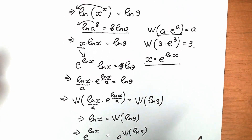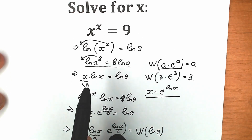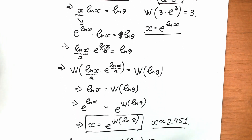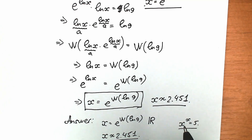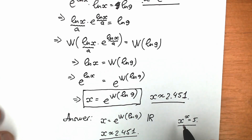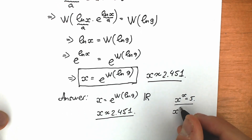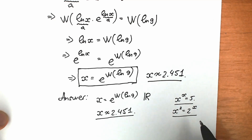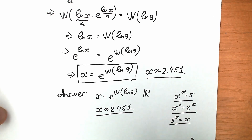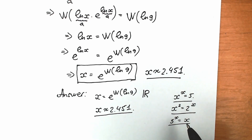This is our solution using Lambert W function. You can also use it for other exponential equations — for example, x squared equals 2 to the x, or 5 to the x equals x. These are really popular exponential equation types, and each of them can be solved with Lambert W function.